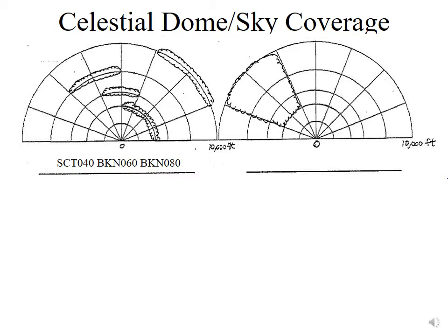The next cloud layer is at 6,000 feet. The celestial dome is cumulative — it doesn't matter that part of this deck overlaps the 4,000-foot deck, since an observer at the ground can't see through the lower layer anyway. Looking up cumulatively to 6,000 feet, we now have five quadrants out of eight covered, which falls into the broken category: BKN 060.